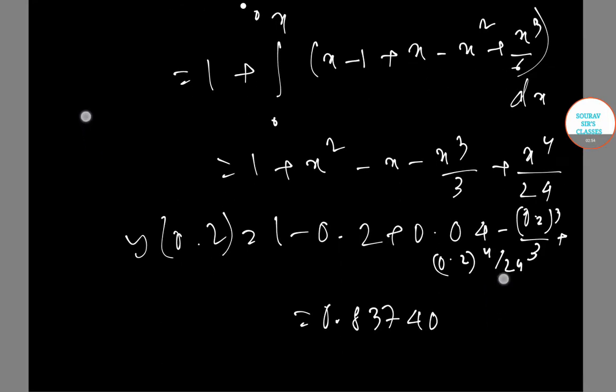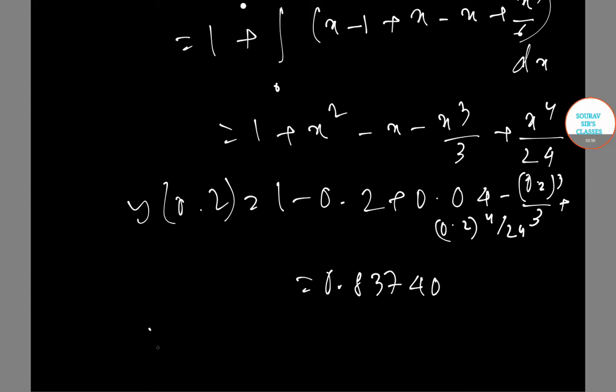The given accuracy of two decimal places is attained. So y(0.2) = 0.84, and answer is c. Our correct option is c.